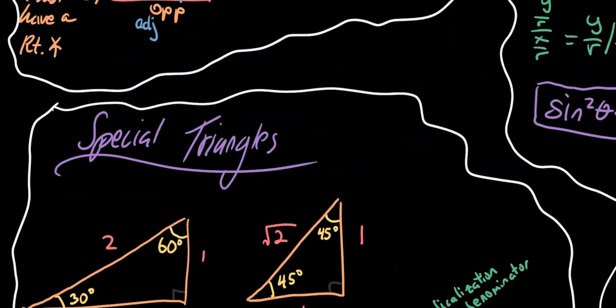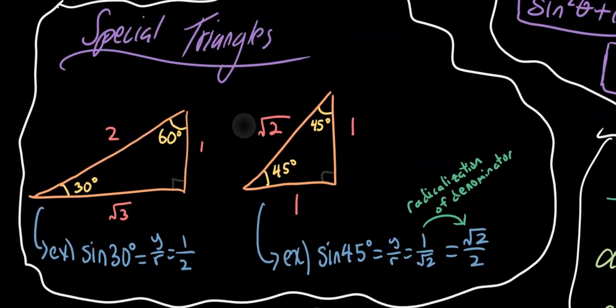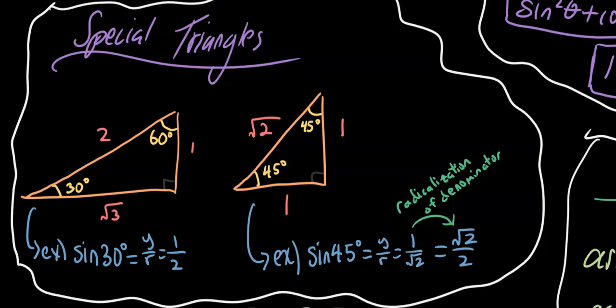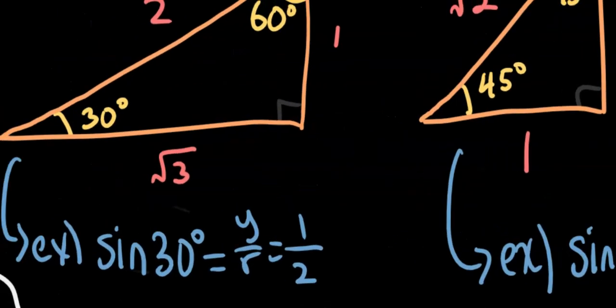Now let's see how our trig functions can relate when we have some real numbers involved, with special triangles. The two special triangles—triangles with common angles like 30 degrees, 60 degrees, and 45 degrees—are the 2 square root 3, 1 triangle and the square root 2, 1, 1 triangle.